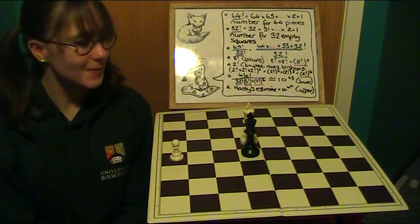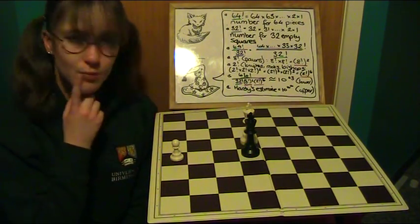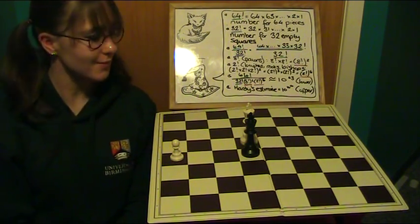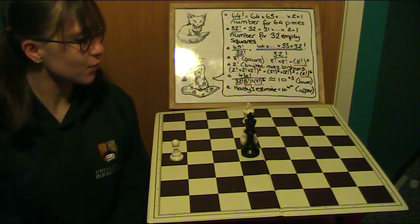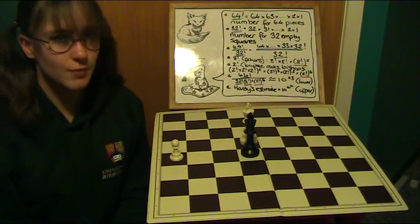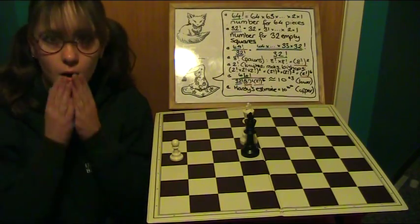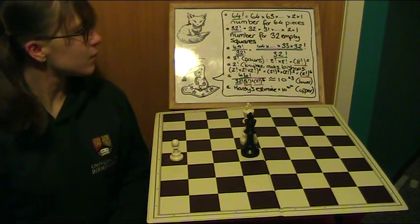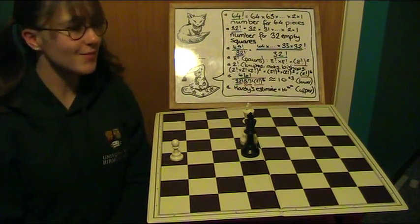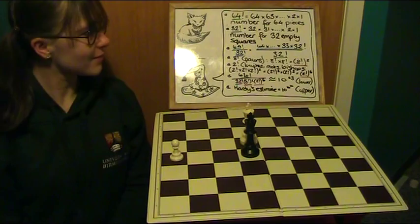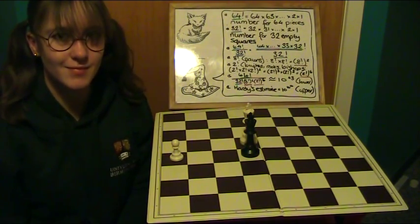So for each of the 64 squares that we can start with, we have another 63 ways of placing the second piece. And so on. It turns out we have to multiply this all the way down to 1 to give the number of combinations of placing all 64 pieces. It turns out there is actually a notation for this. We call it factorial. We use the exclamation mark to symbolize this. Any number which is factorial means that we can take that number and multiply it by every whole number less than it until you get to 1.